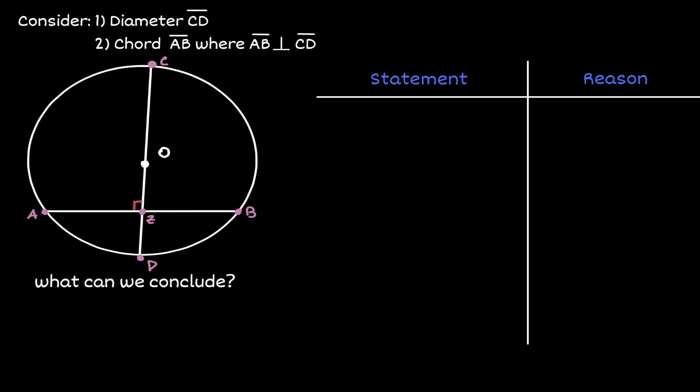What we can conclude is that this chord got bisected by the perpendicular diameter. And in addition, the perpendicular diameter bisected arc AB. So DB is congruent to AD.